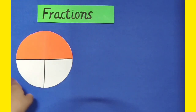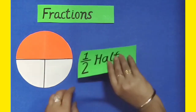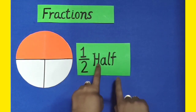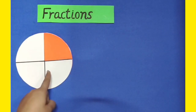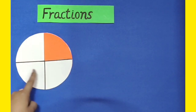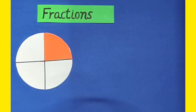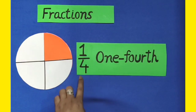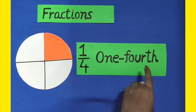Here in this picture, half of the circle is colourful. So its fraction form will be 1 by 2, and in words it can be written as half. In this figure, there are 4 equal parts and one of the equal parts is colourful. So its fraction form will be 1 by 4, and in words it can be written as 1 fourth.